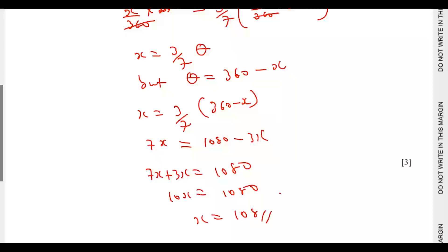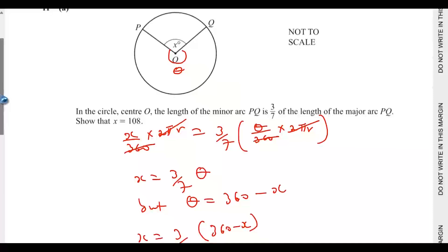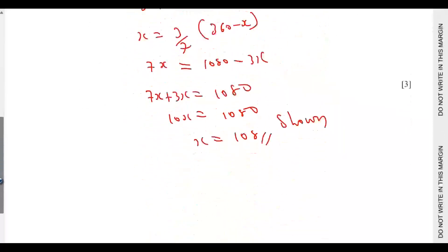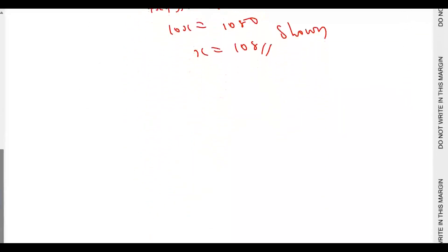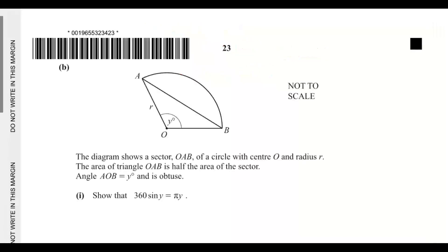Then 10x equals 1080, so x equals 108. This is shown — we have proved that x equals 108 degrees. That is pretty straightforward. Let's go to the next question, Part B.